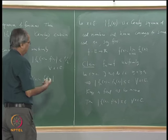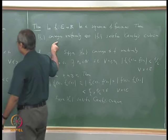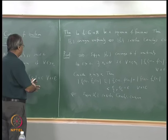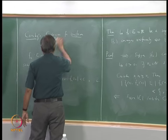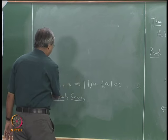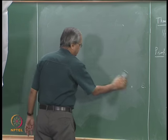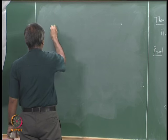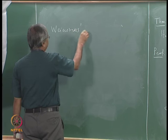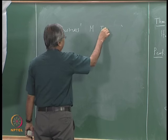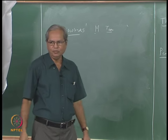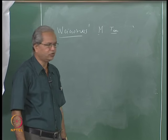This theorem essentially says that B(E) is a complete metric space. Translating this to the convergence of a series, we get one useful criterion called the Weierstrass M-test. This is a test which helps in deciding easily about certain kinds of series whether they are uniformly convergent or not.